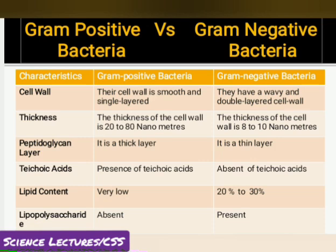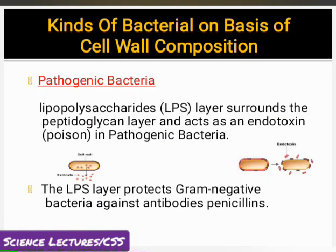Gram positive کی cell wall smooth اور single layered ہے جبکہ gram negative کی wavy اور double layered ہے۔ Gram positive کی cell wall کی thickness 20 to 80 nanometer ہے جبکہ gram negative کی 8 to 10 nanometer۔ Gram positive میں peptidoglycan thick ہے، teichoic acid present ہے، fats کی concentration low ہے، اور lipopolysaccharides absent ہیں۔ Gram negative میں teichoic acid absent ہوتے ہیں، lipids 20 to 30% ہے، اور lipopolysaccharide کی complete layer present ہوتی ہے۔